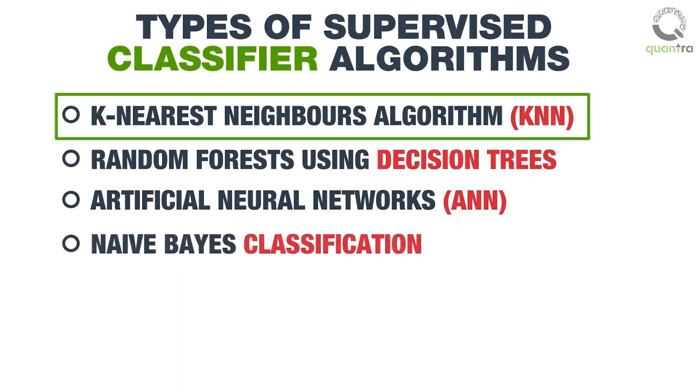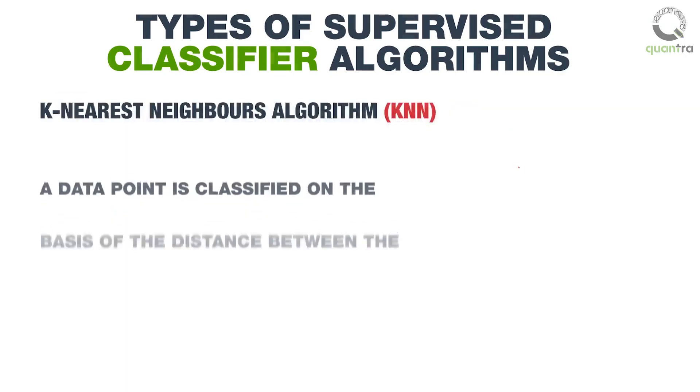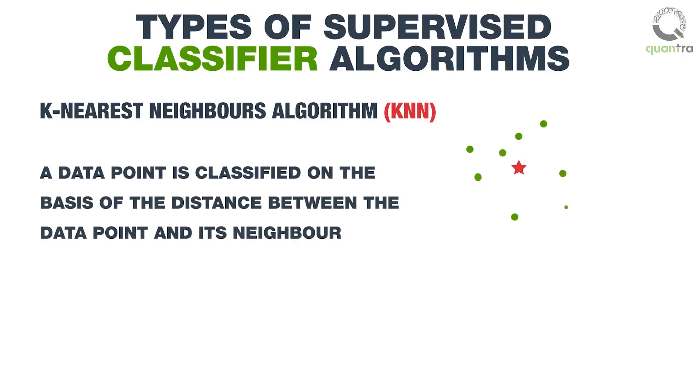First, let us learn about the K-nearest Neighbors Algorithm, or KNN. In KNN, a data point is classified on the basis of the distance between the data point and its neighbor.